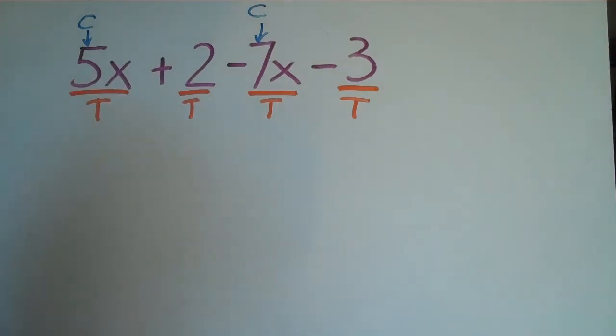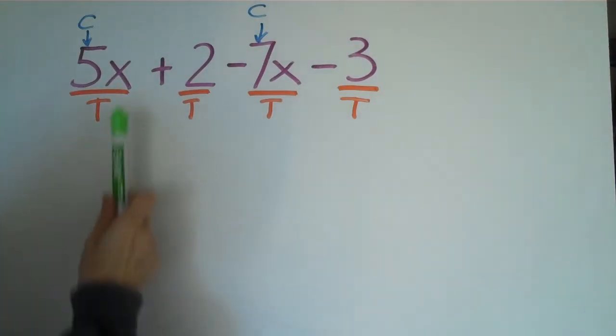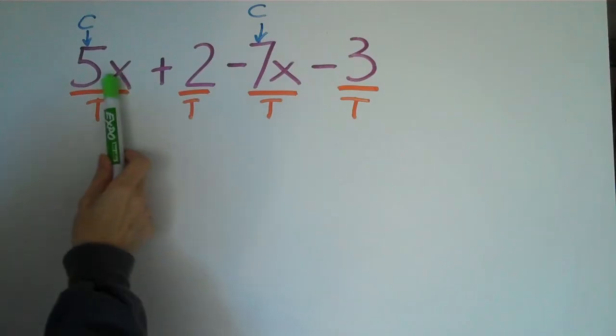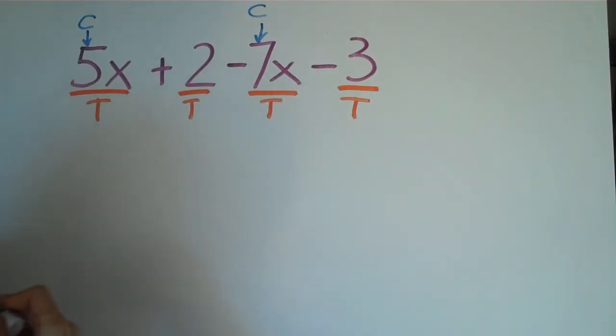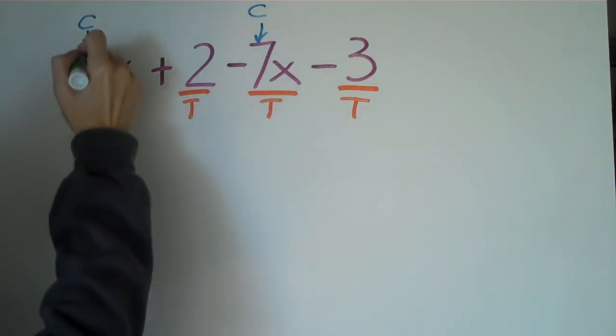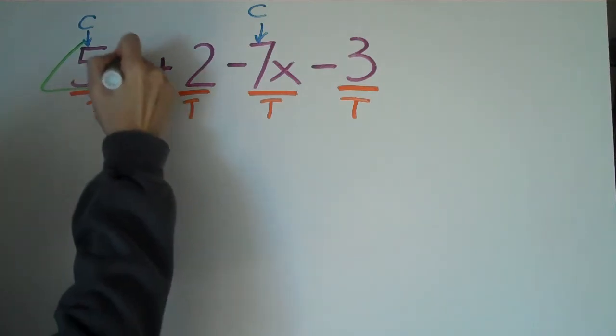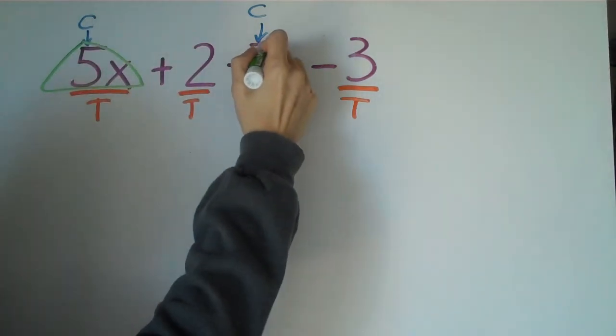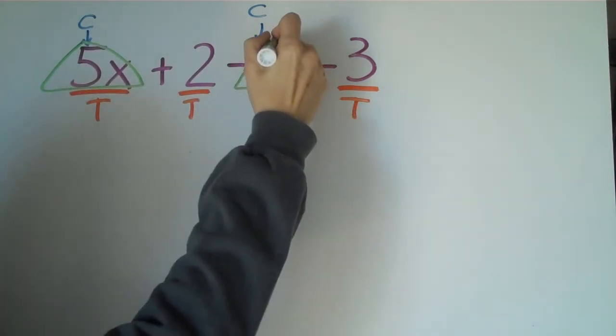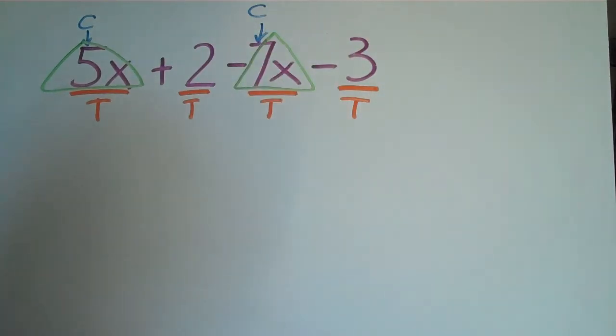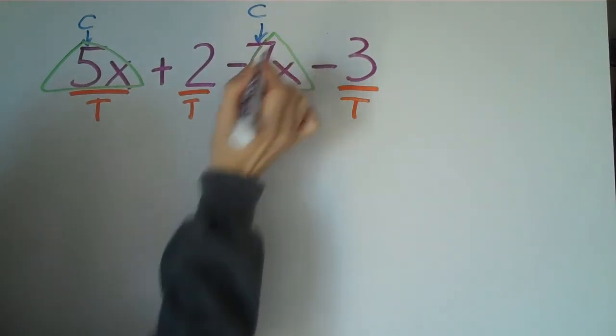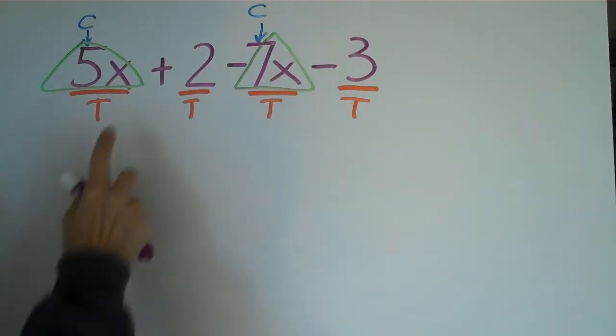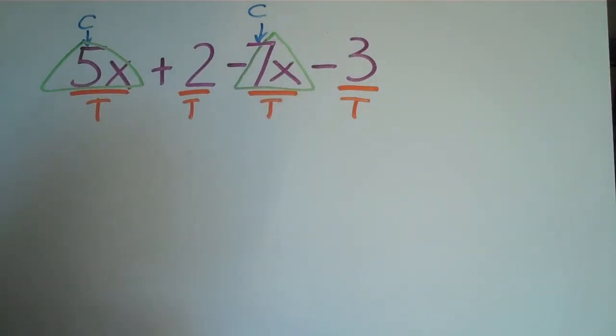And then we have like terms. Well, what are like terms? Anything that ends in the same variable, like 5x and 7x, those would be like terms. So I'm just going to go ahead and put a triangle so you know they're matching. So those two are matching. You can see that remains a 7 there. So 5x and 7x are both like terms.